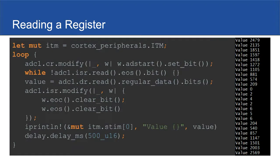Here's an example from the main loop. We set the start bit, we do a busy wait — reading is pretty much the same as writing, you just dot read and then specify what bit within that register you want to read. We busy wait for the ADC to complete the conversion, get that value from the register, clear our status bits, print it out, wait half a second. Here on the right is example output from that.